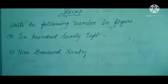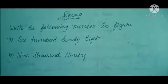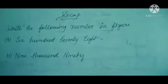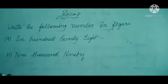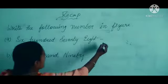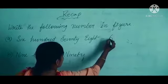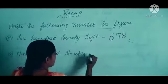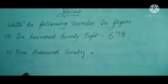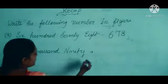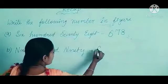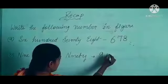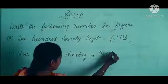Next, from what you learned in 4th class: write the following numbers in figures. Your question is 678 — how will you write it? 678. Next is 9090 — so 9000, you will put a comma, then 090, which is 90.